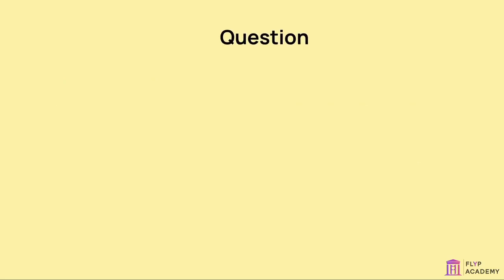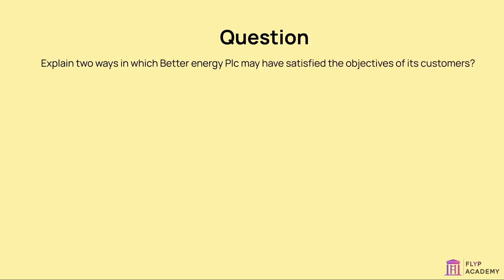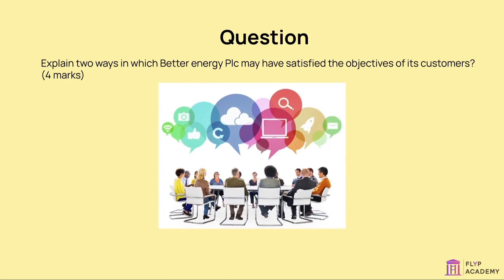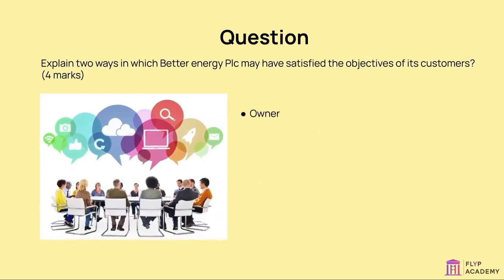For example question: Explain two ways in which Better Energy plc may have satisfied the objectives of its customers. (Four marks.) Different stakeholders have different objectives. The interests of different stakeholder groups can conflict — for example, owners generally seek high profits and so may be reluctant to see the business pay high wages to staff.